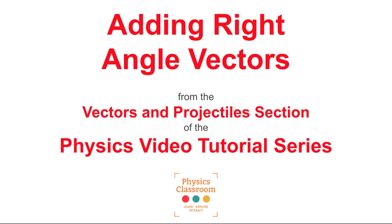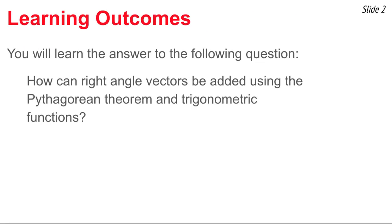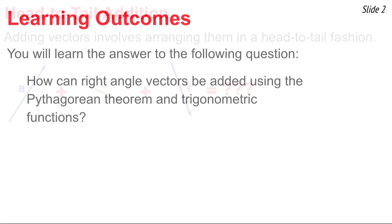Welcome to the Physics Classroom's video tutorial on vectors and projectiles. The topic of this video is adding right angle vectors. The question we wish to answer is: how can you use the Pythagorean theorem and trigonometric functions to determine the vector sum of two or more right angle vectors? Let's get started.